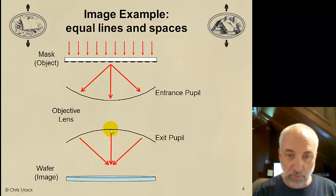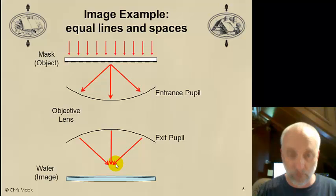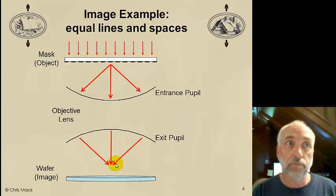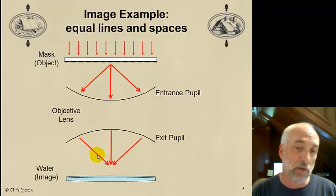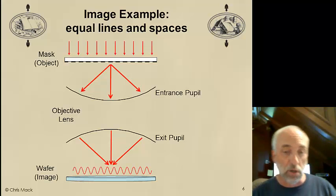But I'll get three diffracted orders that make it through this particular lens. The zero order is in the middle here, the plus first order over here, and the minus first order over here. This light will be transformed by the lens to be light traveling away from the exit pupil to the wafer. By the time it reaches the wafer, these will be plane waves. A normally incident plane wave traveling straight down coming from the zero order. The plus first order will produce a plane wave traveling at an angle theta. Minus first order will produce the same angle but a negative angle.